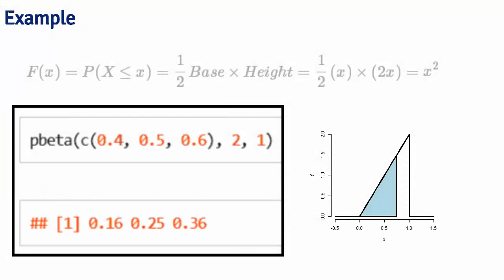The probability that 40% of the calls or fewer get answered on a given day is 16%. The probability that 50% or fewer get answered is 25%. The probability that 60% or fewer get answered is 36%. If you wanted the survival function, it's 1 minus the cumulative distribution function, so it's 1 minus x squared.